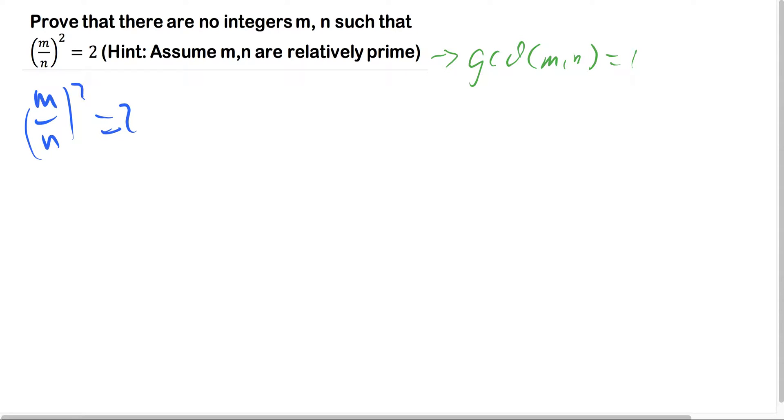Now this can be rewritten as m squared over n squared equals 2. And that can in fact be rewritten as m squared equals 2n squared.